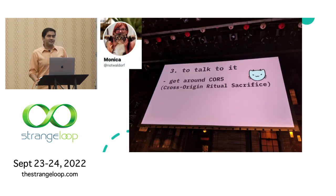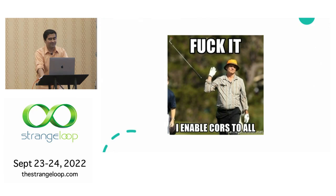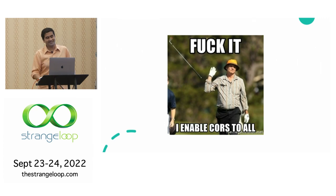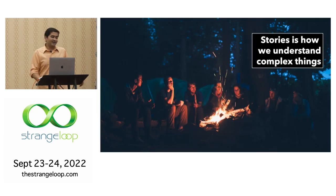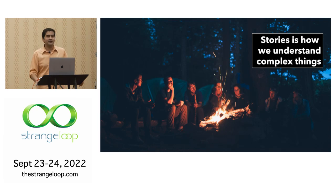There's another meme: 'cross origin ritual sacrifice.' People just say enable CORS to all — it's not worth figuring out what's happening. And that's sad. I think there is a logic to CORS that we can figure out. Trying to explain CORS technically is impossible. Complex things are best understood as a story, so I'll try to explain the story of how CORS came to be. Hopefully things make sense.